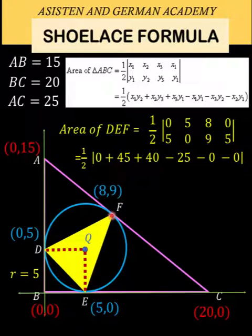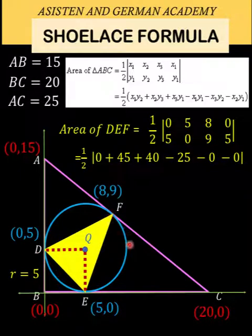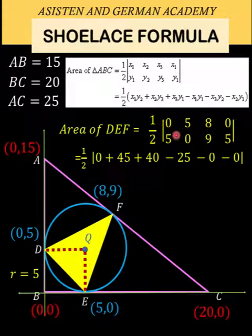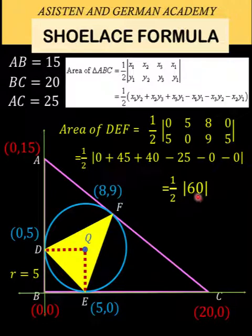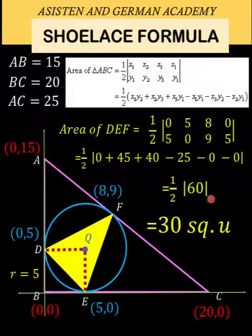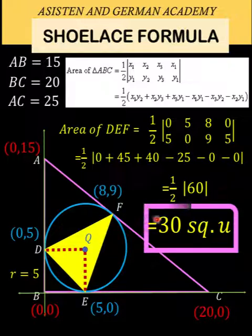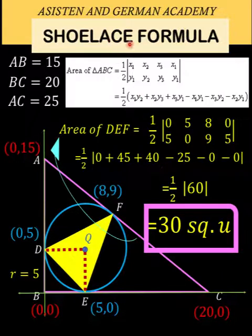When coordinates are listed counterclockwise the value inside the absolute value is positive; clockwise gives a negative value, but taking the absolute value always yields a positive area. Simplifying: 45 + 40 = 95, minus 25 = 60, so area = (1/2)|60| = 30 square units. Therefore the area of the yellow triangle is 30 square units — our final answer using the shoelace formula. Other methods will yield the same result.